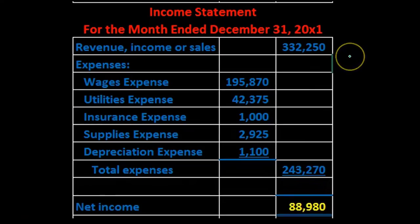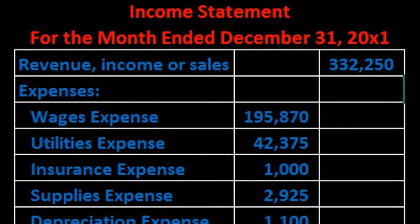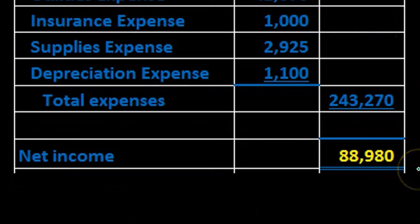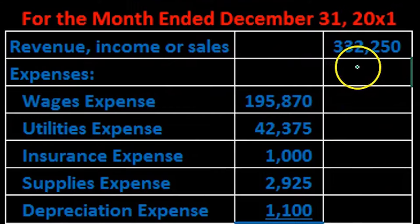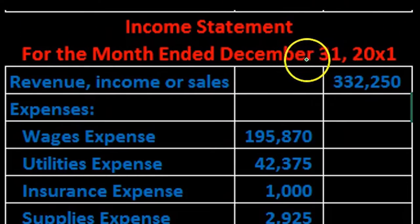Here's the income statement. We're going to have revenue minus expenses. This is a single-step income statement, so we'll have groupings of all revenue accounts minus expense accounts, which gives us net income. Note that revenue will be in the outer column — since we don't have multiple revenue accounts there's no subcategory, so we pull it directly to the right. These two columns do not mean debits and credits.